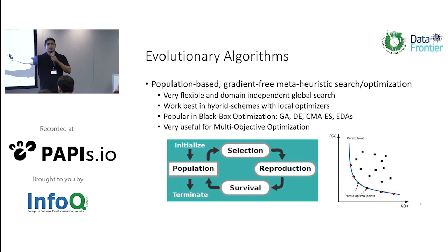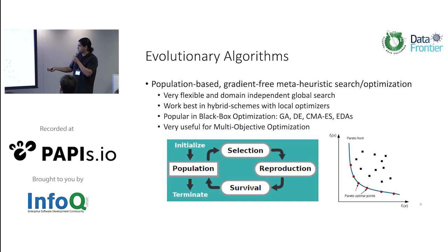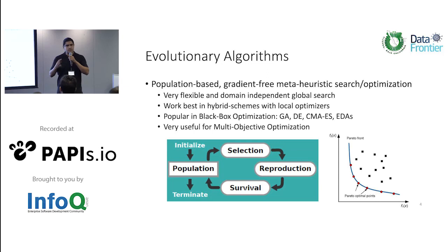One cool thing you can do with evolutionary algorithms is attack multi-objective optimization problems. Here you have a Pareto front where you have two conflicting objectives, so you're not looking for one solution — you're looking for a set of solutions. These population-based strategies are a very nice way to solve this kind of difficult problem where gradient methods will have some difficulties.